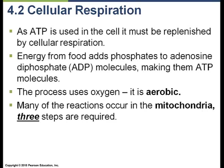You may remember, hopefully for an upcoming exam, that in Chapter 2 we talked about the mitochondria as one organelle found in the cell. The mitochondria is known as the powerhouse of the cell — it's where ATP is produced. So let's talk about these three steps.